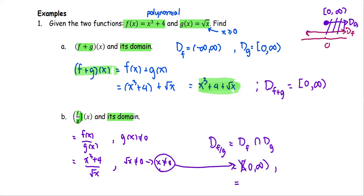That gives us the domain of f over g as the set of x where x is greater than zero — not including zero, or positive numbers only. In interval form, this is zero to positive infinity, open bracket at zero.